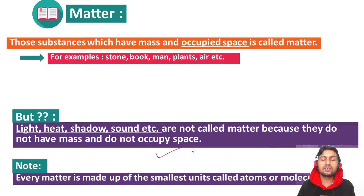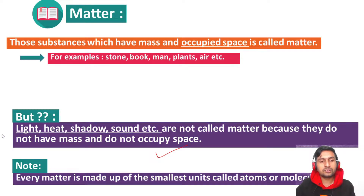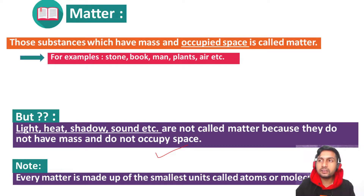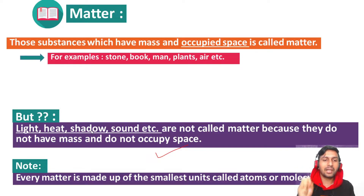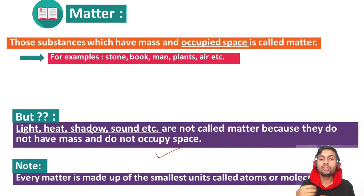Write down any two or three substances that are not called matter and explain why. Examples include: light, sunlight, heat, radiation, shadow, and dark. These are not matter because they lack mass and do not occupy space.